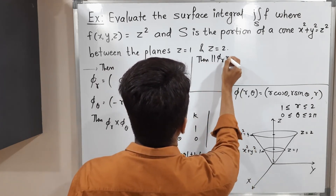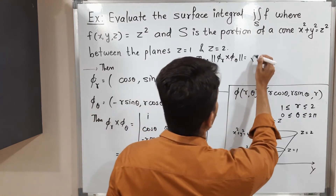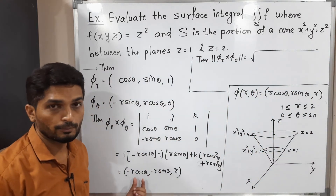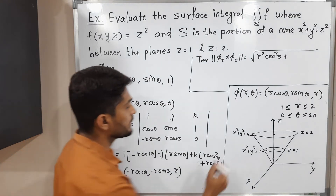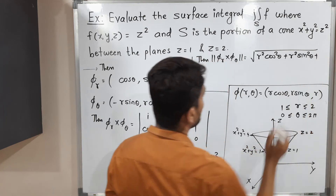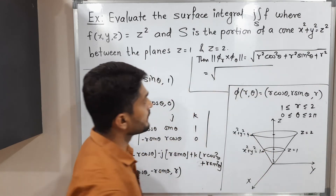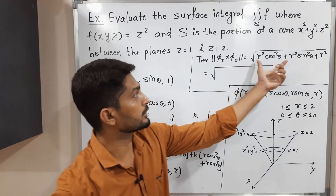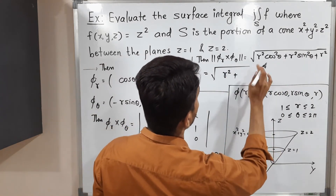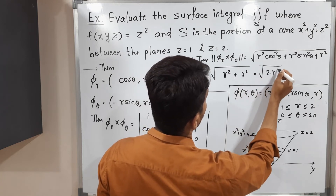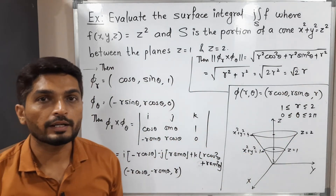Now let us find the norm of phi_R cross phi_theta. The norm is the square root of (minus R cos theta) squared plus (minus R sin theta) squared plus R squared, which equals the square root of R squared cos squared theta plus R squared sin squared theta plus R squared. Taking R squared common from the first two terms, cos squared plus sin squared equals 1, giving R squared plus R squared equals 2R squared. So the norm equals the square root of 2R squared, which is root 2 times R.